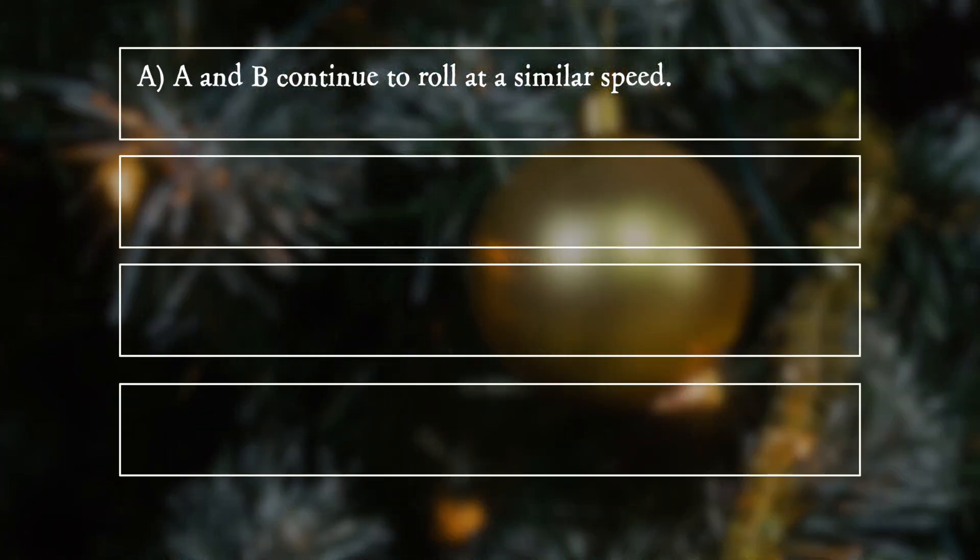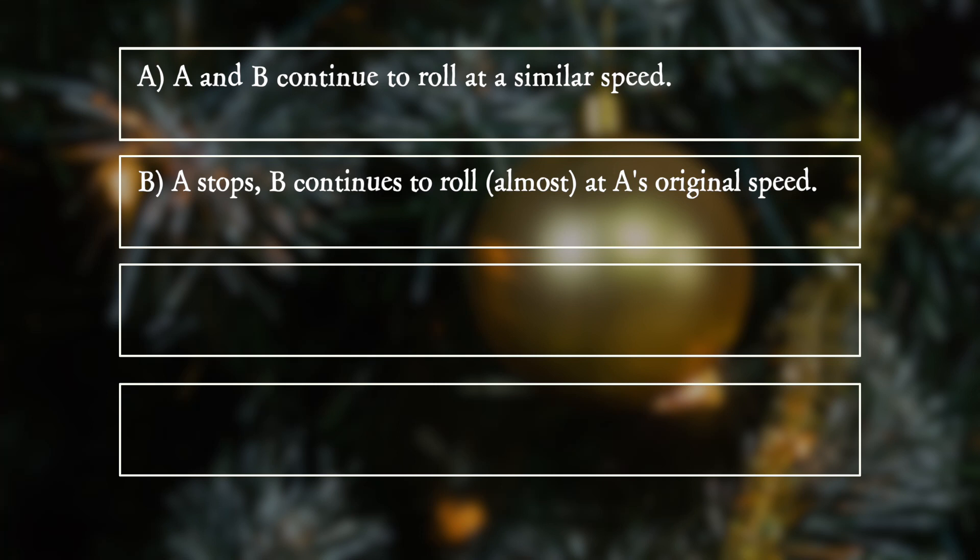Option A: A and B continue to roll at a similar speed. Option B: A stops, B continues to roll almost at A's original speed.